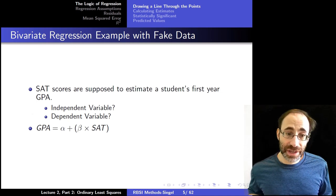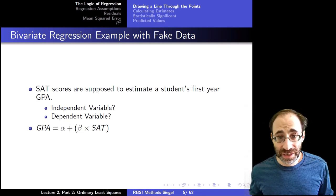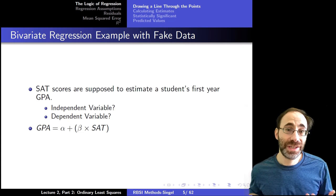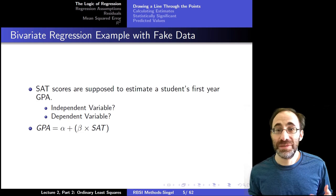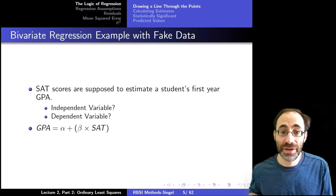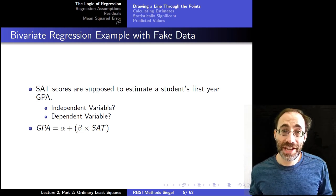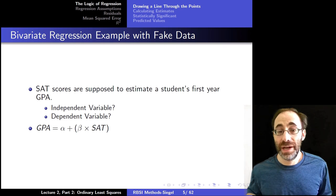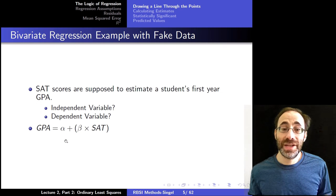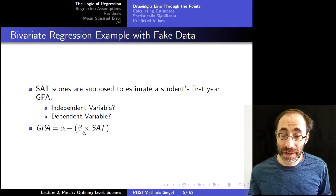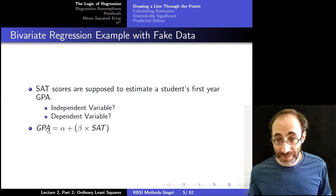Let's take an example with some fake data. You typically hear the reason for standardized testing is that it's somehow supposed to estimate success in college or grad school. Here, the SATs are supposed to estimate a student's first-year success as measured by their GPA. So SAT scores are supposed to predict GPA, changing SAT scores is supposed to lead to a change in GPA. So SATs are the independent variable and GPA is the dependent variable.